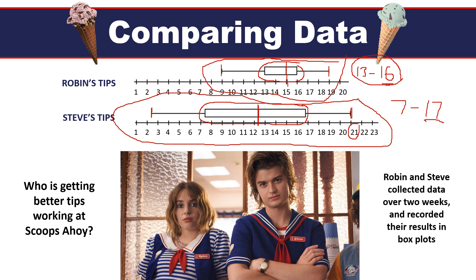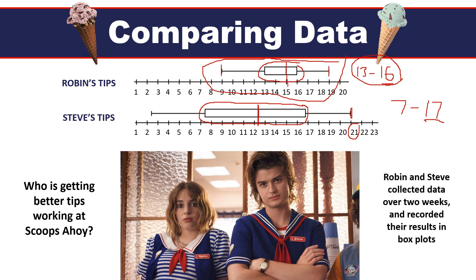The purpose of this is to show you that the larger the spread, the more varied the data, whereas Robin's box plot is smaller and more concise — meaning the data in Robin's tips is more consistent.